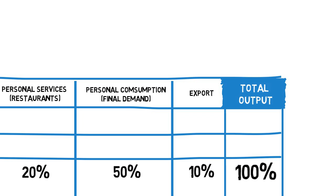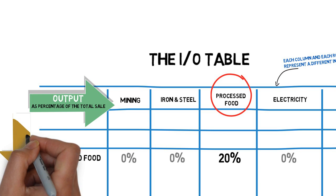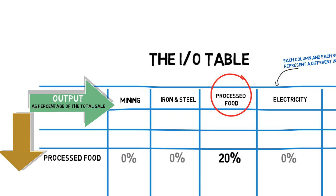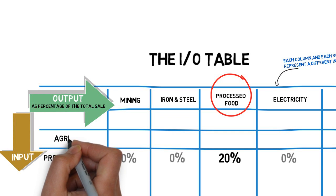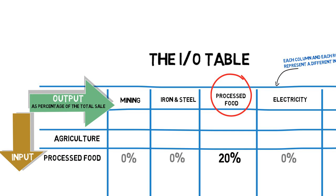The input-output tables also show us from where processed food gets its inputs. And we do so by this time looking down the column headed by processed food. Unsurprisingly, a major source of inputs comes from the agricultural sector. It's typically about 25% of the total.